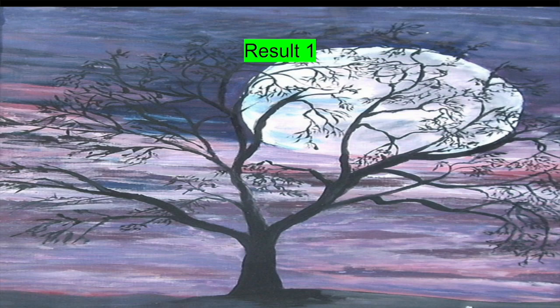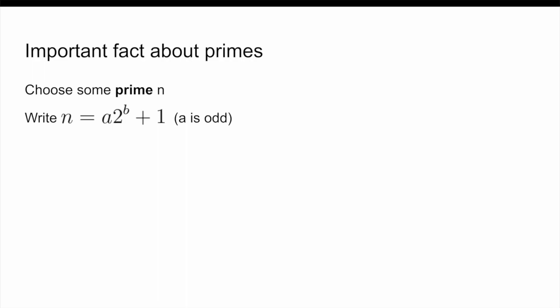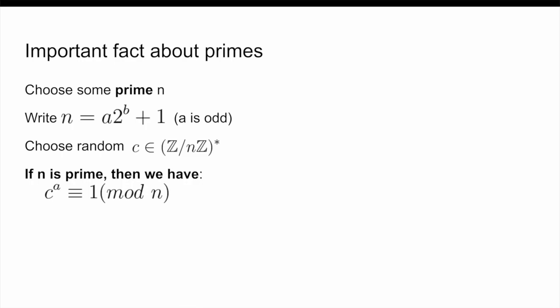Let's start by showing exactly what the special property of C and N we mentioned before is, and by showing that as long as N is a prime number, that property is always going to be satisfied. Take our fixed N and write it as A times 2 to the power of B plus 1, where A is an odd number. Basically, what we have done is to just factor out all the 2s from N minus 1 until we are left with our odd number A. Now, choose some random C in Z/NZ* and fix it for the rest of the proof. We claim that if N is prime, then either C to the power of A is congruent to 1 modulo N, or C to the power of A times 2^i is congruent to negative 1 modulo N for some value of i from 0 to B minus 1.